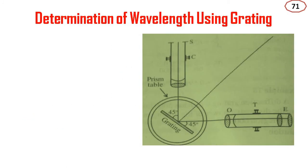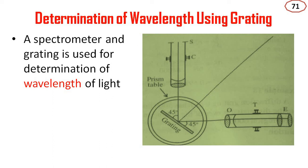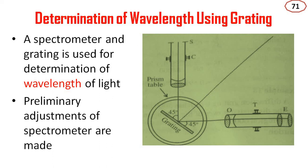For the determination of wavelength using a grating and spectrometer, we use a spectrometer which has a telescope T and a collimator C, with a prism table on which the grating is mounted. Preliminary adjustments of the spectrometer are made first.